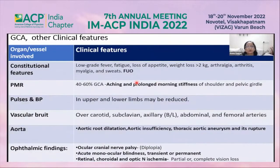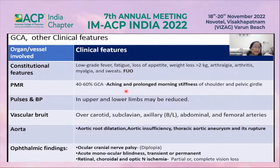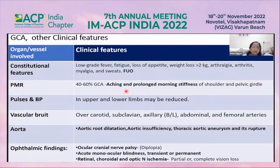Other features of giant cell arteritis include constitutional symptoms: low-grade fever, fatigue, loss of appetite, weight loss, arthralgia, arthritis, myalgia. The patient may present with pyrexia of unknown origin. Polymyalgia rheumatica is seen in 40–60% of patients, with aching and prolonged morning stiffness of the shoulder and pelvic girdle.